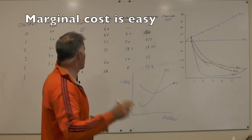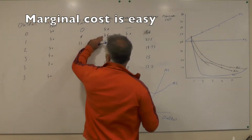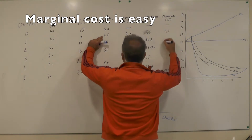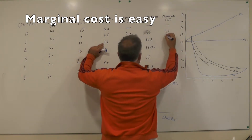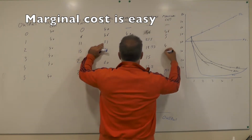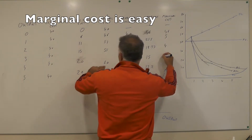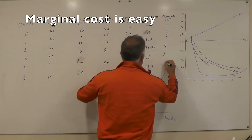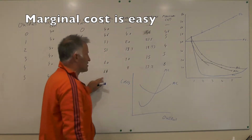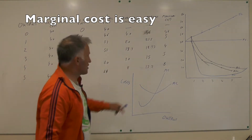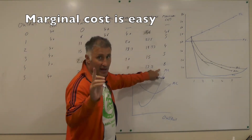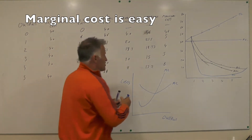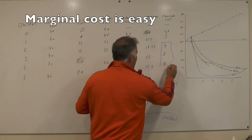The marginal cost is easy to work out. The first marginal cost is 46. The next values are 5, 4, 5, and 6. So the marginal cost starts to go up, which means the law of diminishing returns has started to set in.